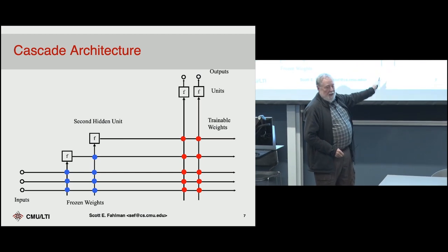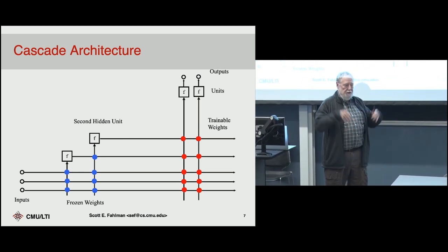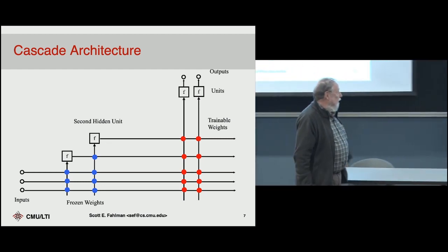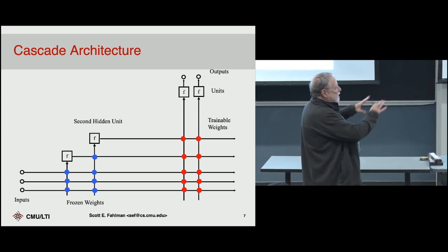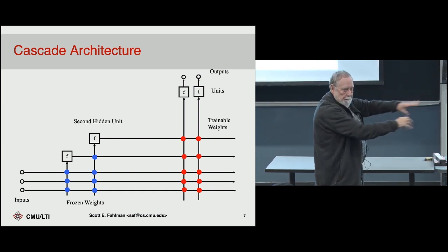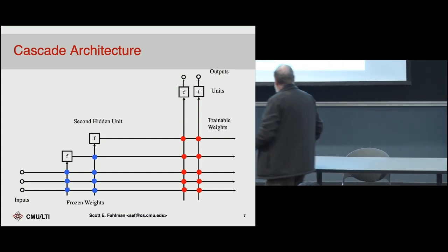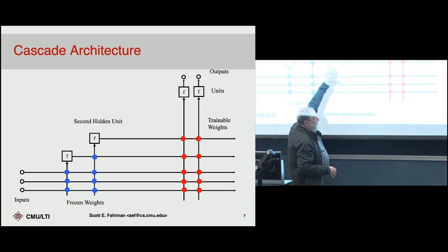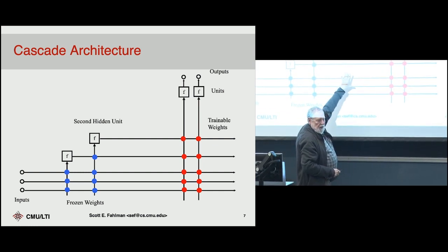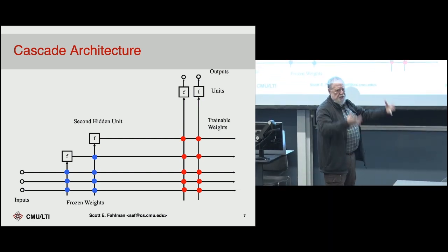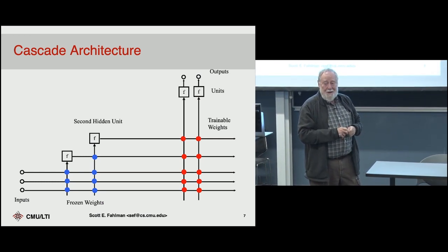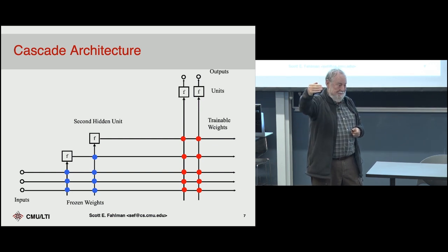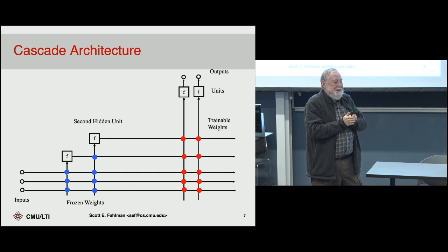We retrain all the output weights because you're trying to blend all available features together. We very routinely got to 15 or 20 or 30 hidden units, which is a network 15 to 30 layers deep. So this is deep learning — it's just that each of the layers is mighty narrow, just one unit. But as you'll see, we can build some pretty complex detectors and features.